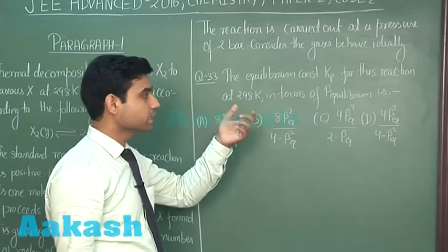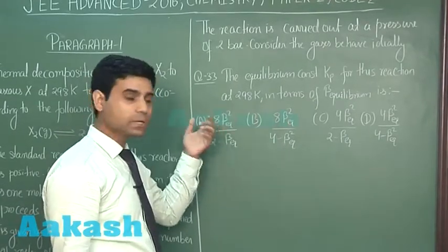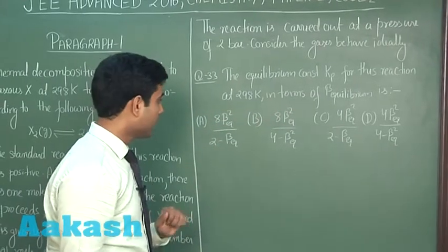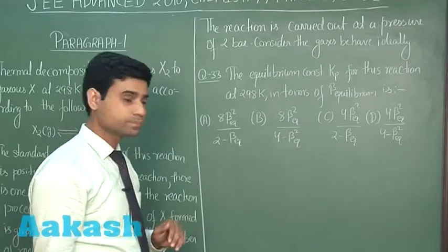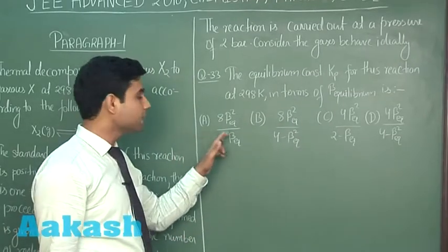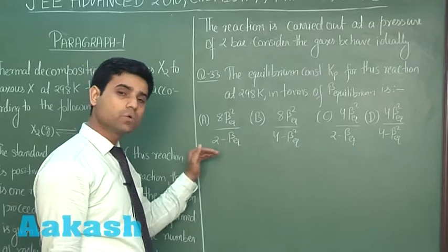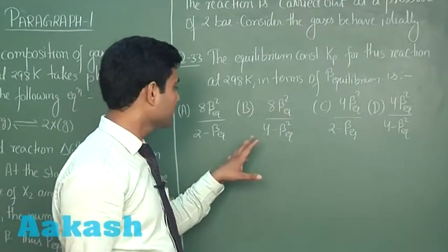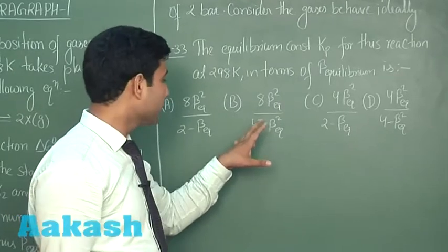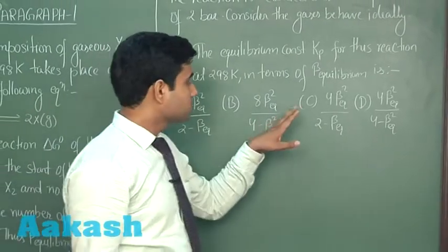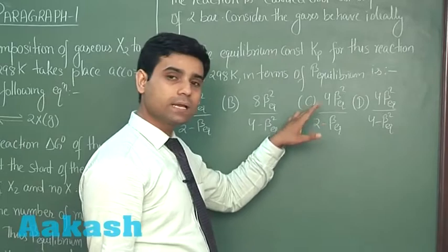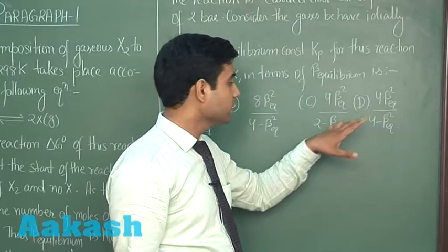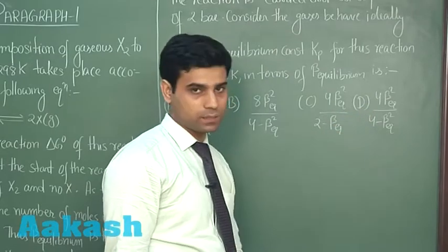Question 33 asks for the equilibrium constant Kp for this reaction at 298 Kelvin in terms of beta_eq. Option A is 8β_eq² / (2 − β_eq). Option B is 8β_eq² / (4 − β_eq²). Option C is 4β_eq² / (2 − β_eq). Option D is 4β_eq² / (4 − β_eq²).